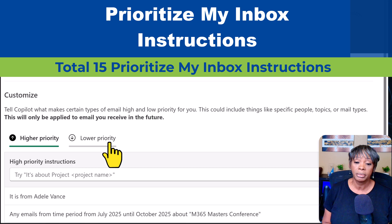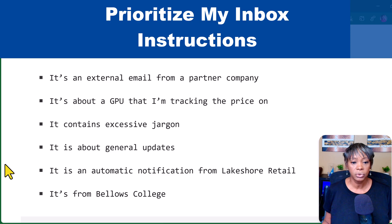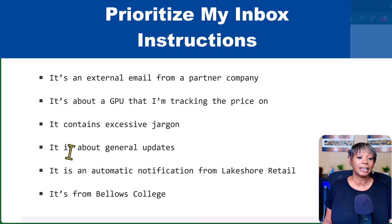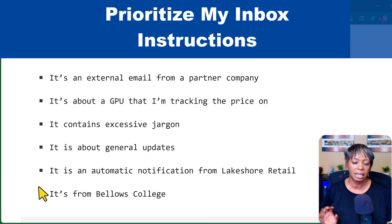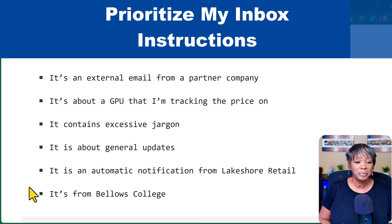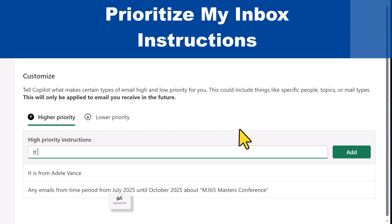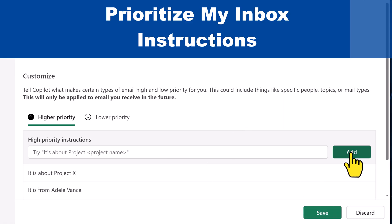Here are a few more examples coming right from the Microsoft website. Notice they use phrasing like 'it is about' and 'it is from.' I found that just putting somebody's name without a full sentence didn't work well. So here are some of the examples Microsoft provided. Go ahead and put some of your examples in the comments below. 'It is about project X' — press Add, that simple.